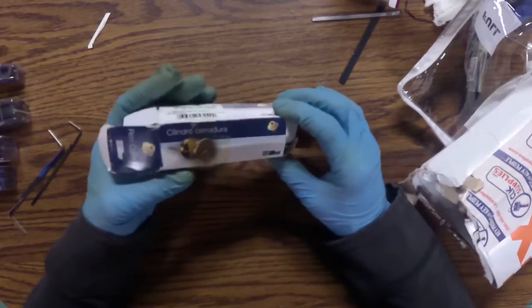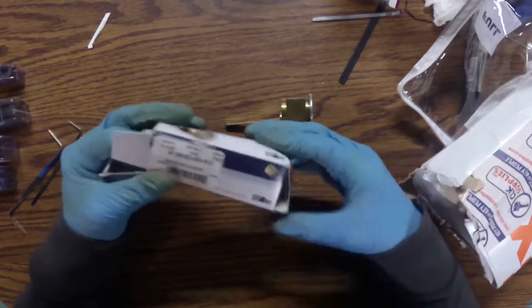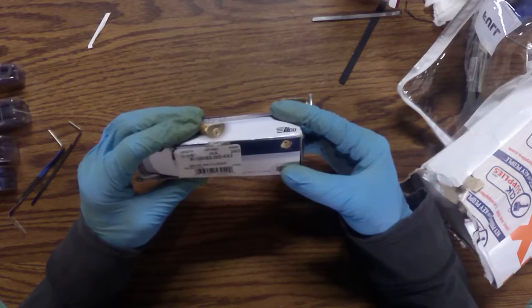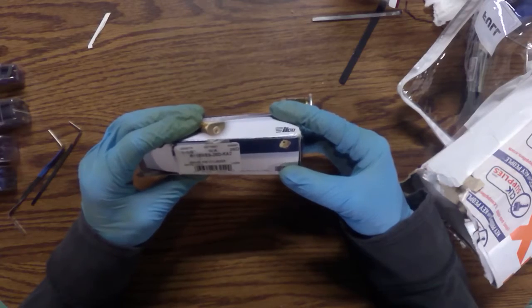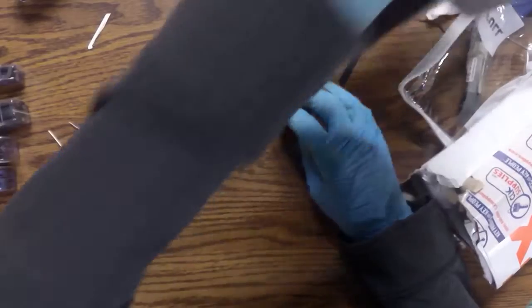Okay. So, this is an ILCO rim cylinder. It has a WA keyway. Give this a try.